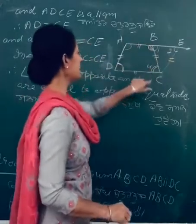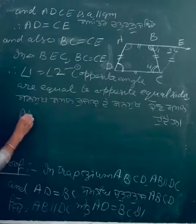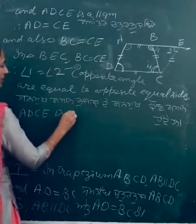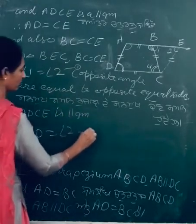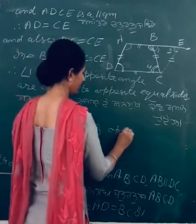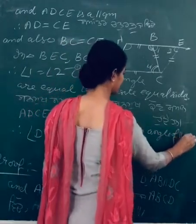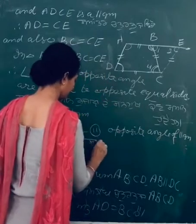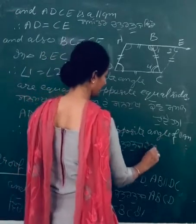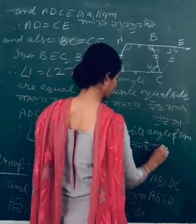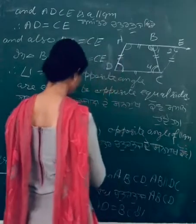ADCE is a parallelogram. So angle D equal angle 2, opposite angles of parallelogram.